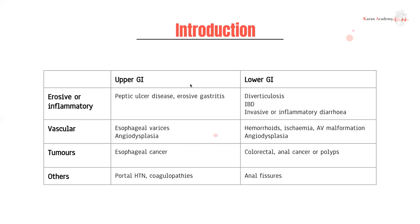Starting off with differentials — broadly, whenever you see a GI bleed, you need to think: is this an upper GI bleed or a lower GI bleed? The two present quite differently. For upper GI bleeds, I like to divide them by organ. With the stomach, we have peptic ulcer disease and erosive gastritis. You can then have vascular causes like esophageal varices and angiodysplasia, tumors like esophageal cancer, and then other things like portal hypertension.